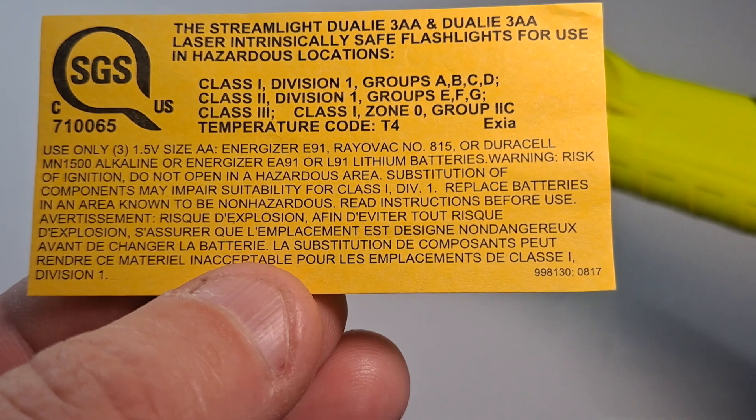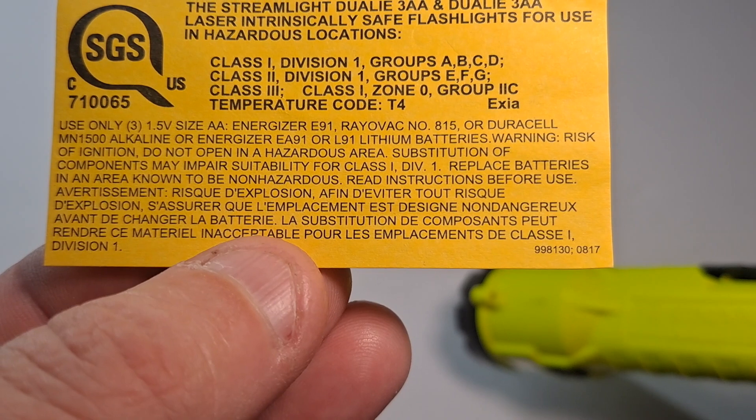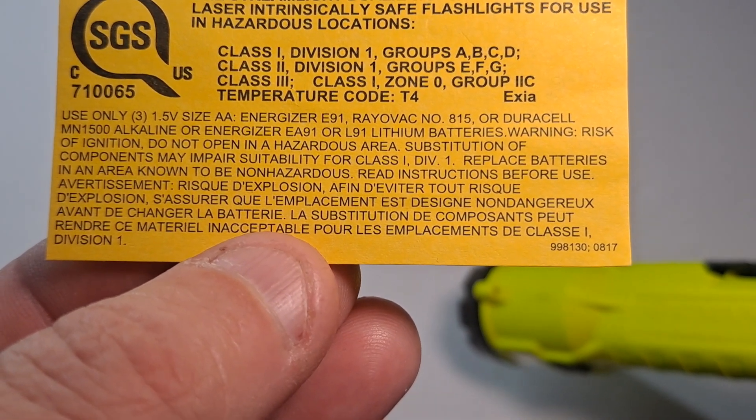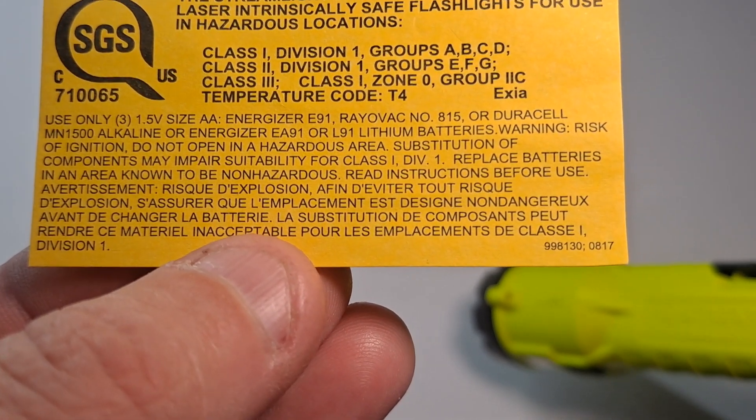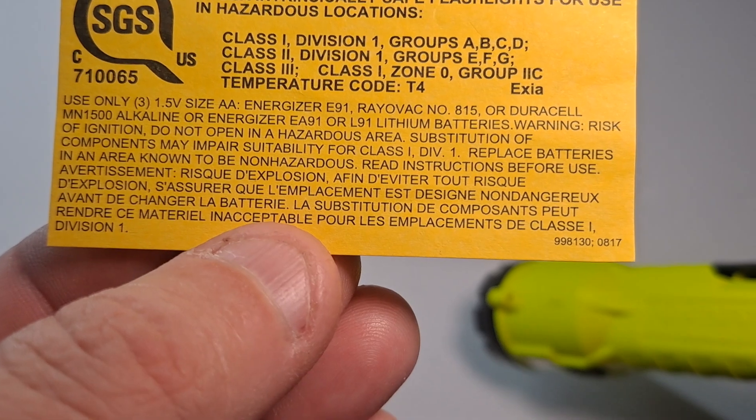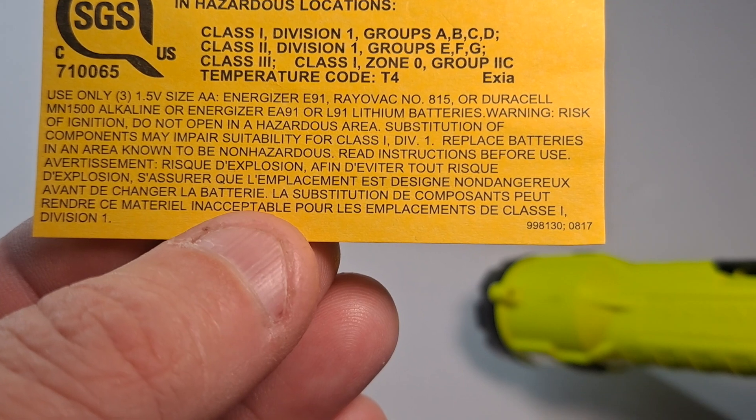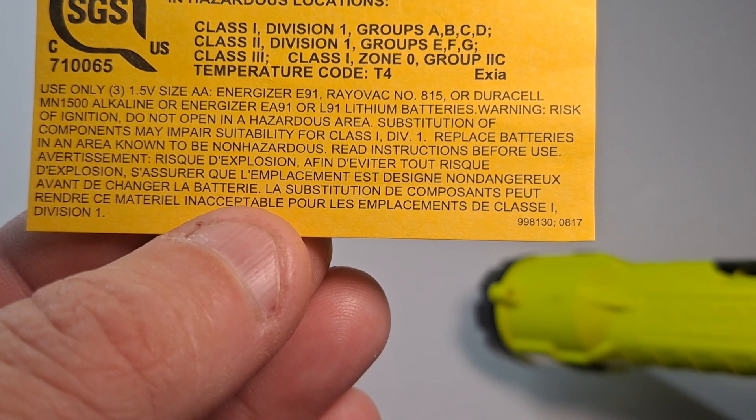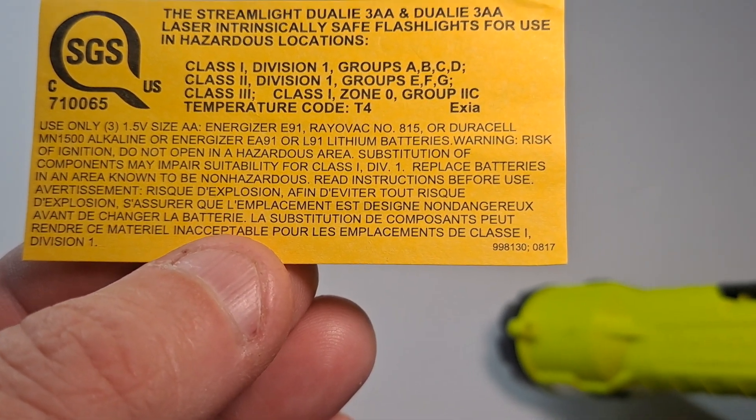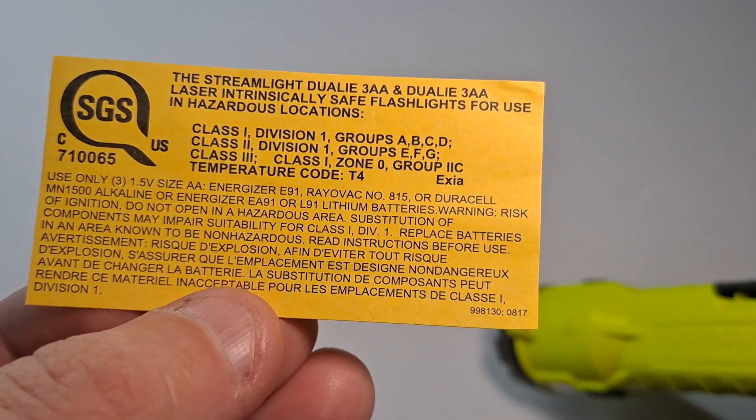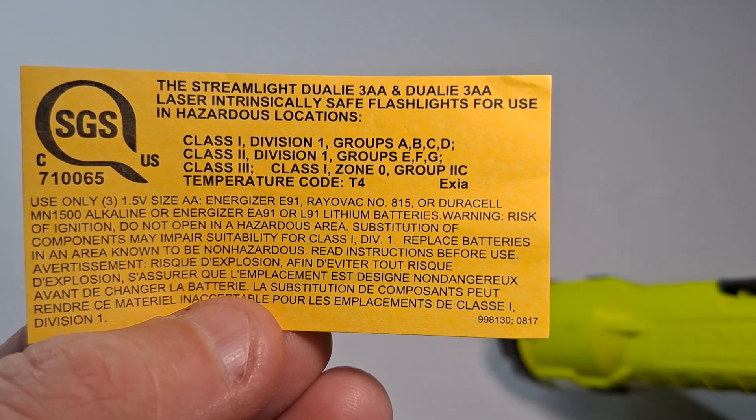Use only three 1.5 size AA Energizer E91s, Rayovac number 815s or Duracell MN 1500 alkaline or Energizer EA91 or L91 lithium batteries. Risk of ignition do not open in hazardous area. Substitution of a component may impair its suitability for Class 1 Division 1. Replace batteries in an area known to be non-hazardous. Read instructions before use. The reason they're recommending only those batteries is those are the only ones classified in their testing.